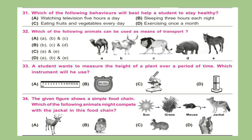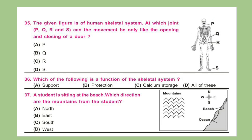Question 34: The given figure shows a simple food chain. Which of the following animals might complete the food chain? Question 35: The given figure is of the human skeletal system. At which joint — P, Q, R, or S — can the movement be only like the opening and closing of a door? Question 36: Which of the following is a function of the skeletal system?